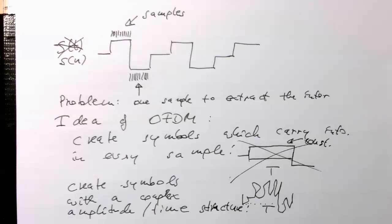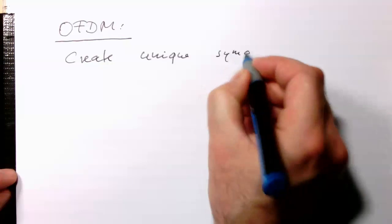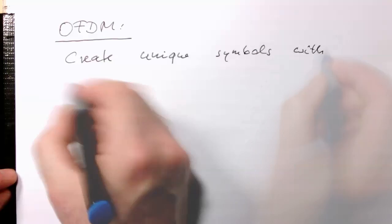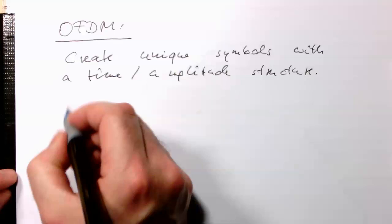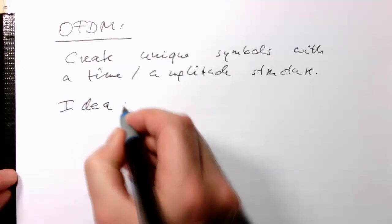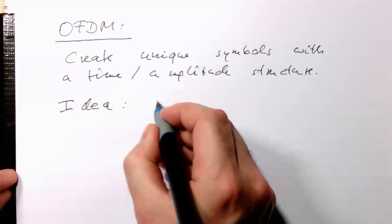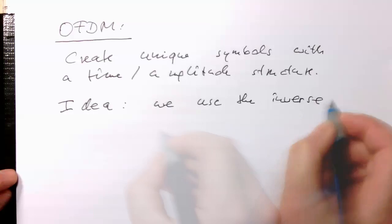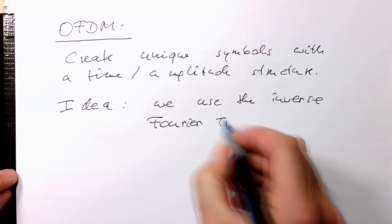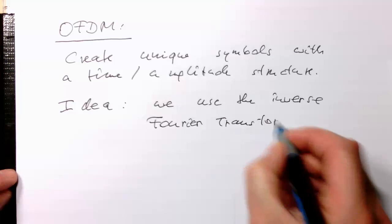What we would like to create is unique symbols with a time and amplitude structure. And this is how to do it is that we use the inverse Fourier transform. So we use the inverse Fourier transform for this.